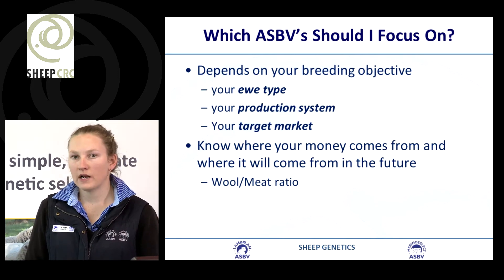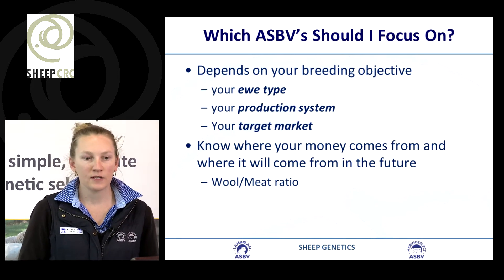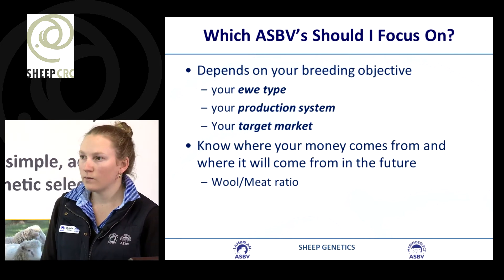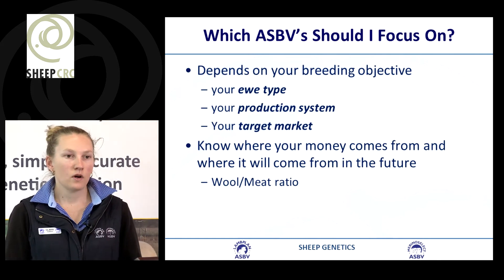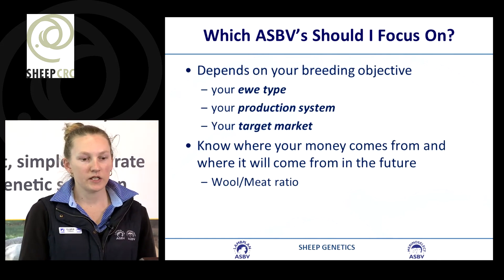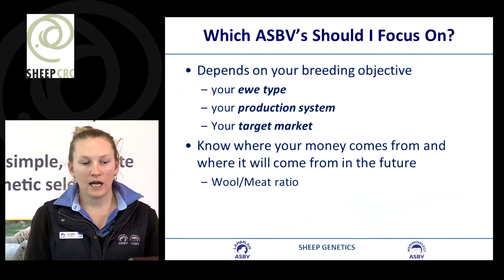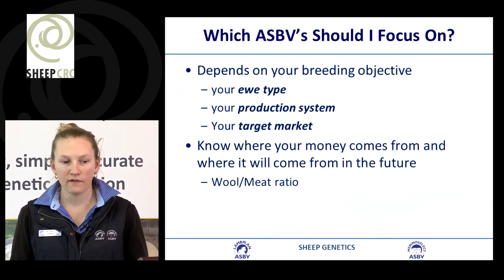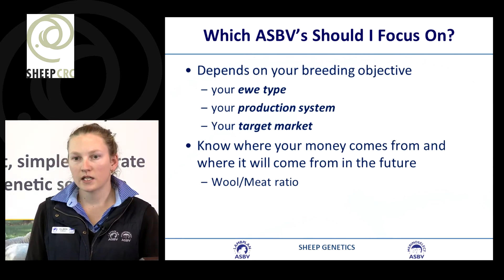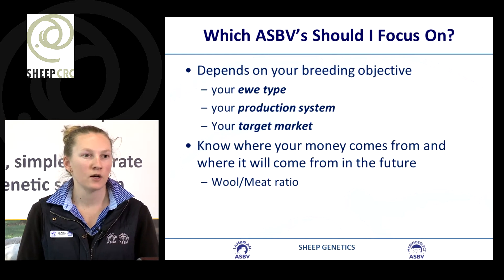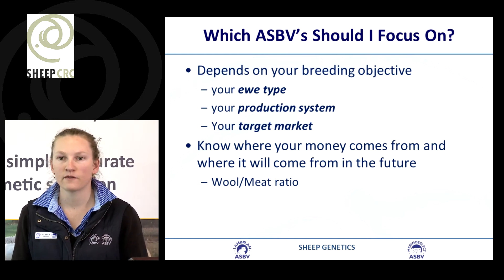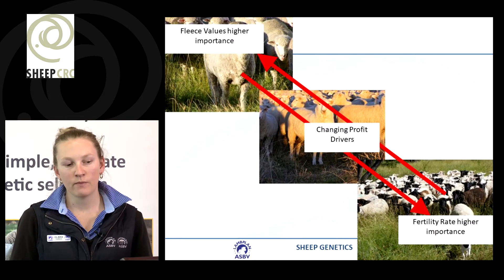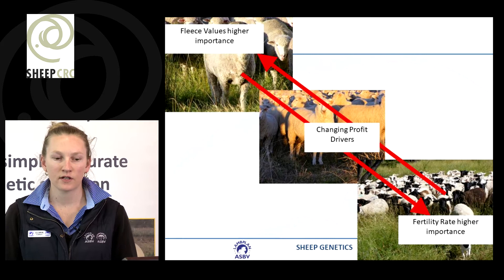When thinking about which breeding values to focus on for ram selection, it depends on your breeding program — what animals you're running, your base use, your production system and environment, and your target market. We need to know what our profit drivers are and where our money is coming from. For example, if you're a dual-purpose Merino, what proportion of profit is coming from meat versus wool?